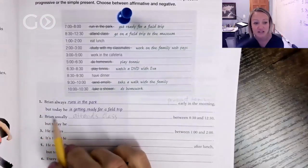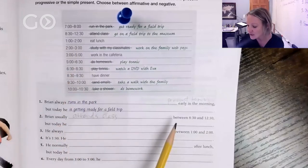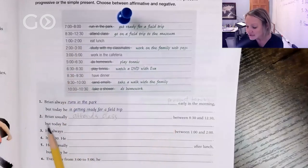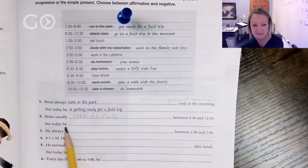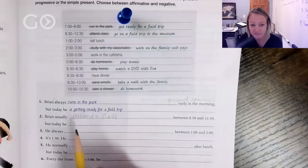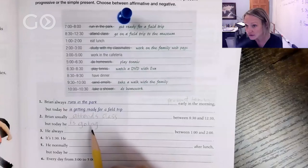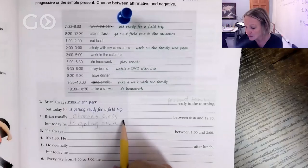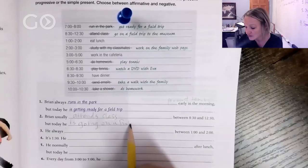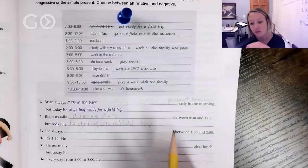So don't forget that s in third person because we're talking about Brian. Brian usually attends class from 8:30 to 12:30. But today he is—what's he doing today? Yes, so we're gonna use is, third person, going on a field trip to the museum.